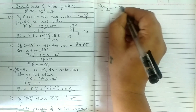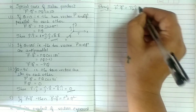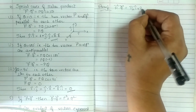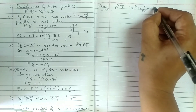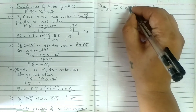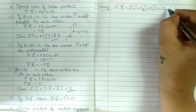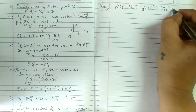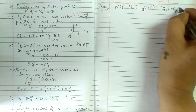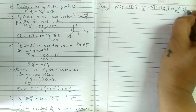P dot Q equals (Px·i cap plus Py·j cap plus Pz·k cap) dot (Qx·i cap plus Qy·j cap plus Qz·k cap). I will multiply the first vector term by term into the whole bracket of Q.